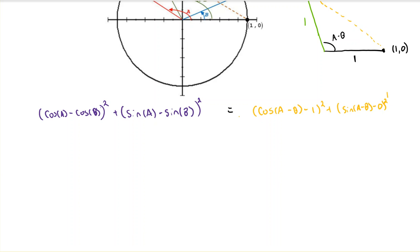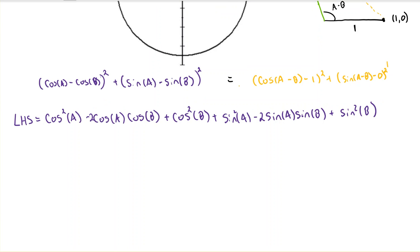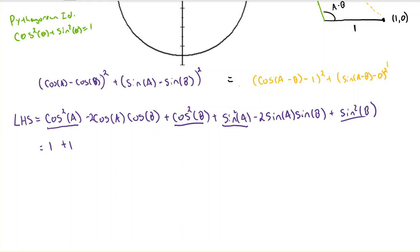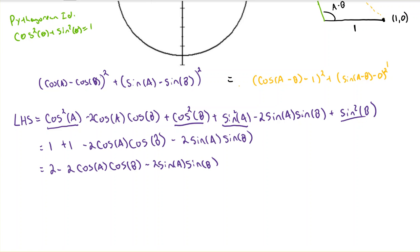Here's where we get clever. I'm going to fully square out and simplify the left-hand side and then the right-hand side. I've expanded the left-hand side and I make a few observations: I have cosine squared of A and sine squared of A in my equation. By the Pythagorean identity — cosine squared theta plus sine squared theta equals one — I can replace cosine squared A and sine squared A with one. I repeat this with cosine squared B and sine squared B, adding another one, leaving me with minus two cosine A cosine B and minus two sine A sine B.